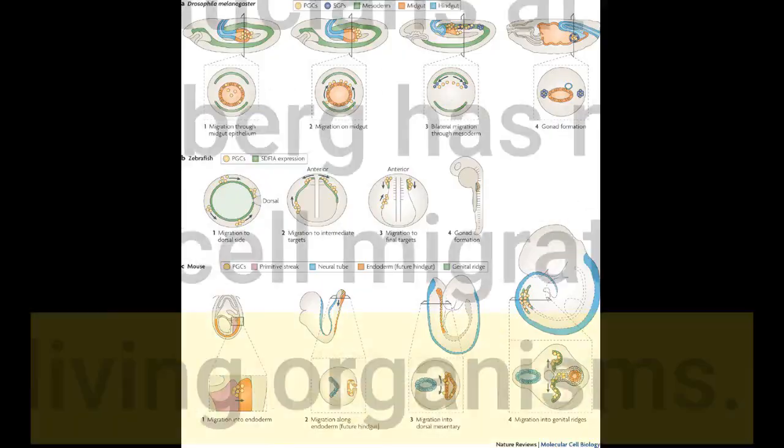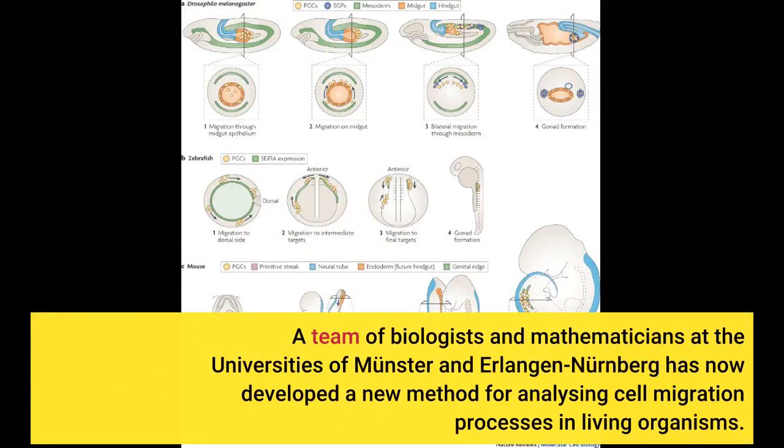A team of biologists and mathematicians at the Universities of Münster and Erlangen-Nürnberg has now developed a new method for analyzing cell migration processes in living organisms.